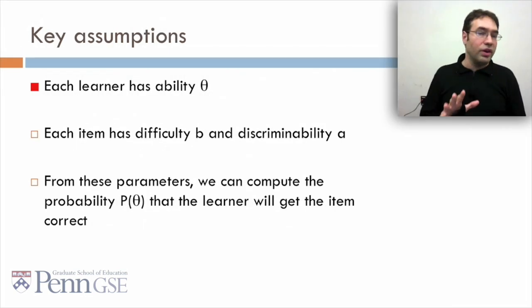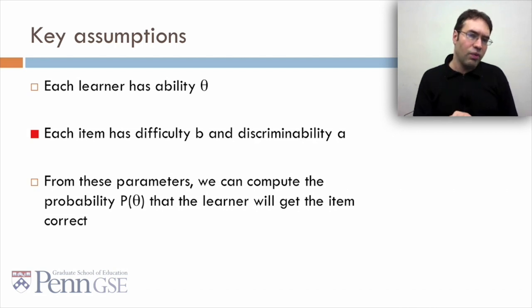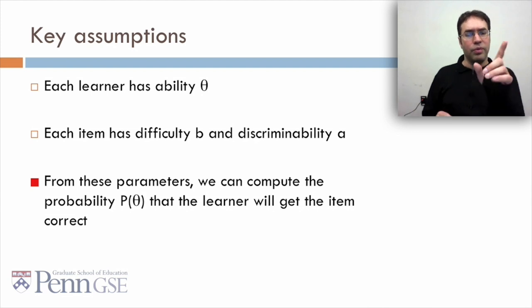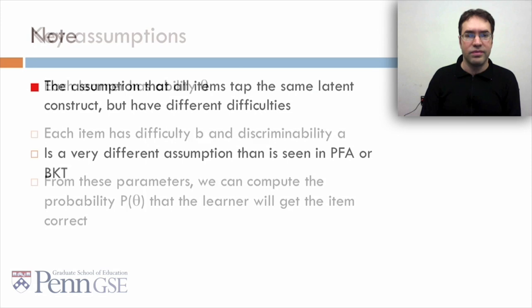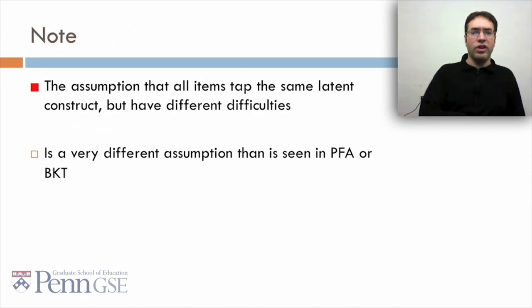Another assumption: each student has an ability called theta, and each item has a difficulty B and discriminability A. We'll talk about what discriminability means in a second. From these parameters, we can compute the probability P(theta) that the learner is going to get the current item correct. The assumption is that all items tap the same latent construct. Everything involves math, but they have different difficulties. And this is a very different assumption than seen in PFA or BKT.